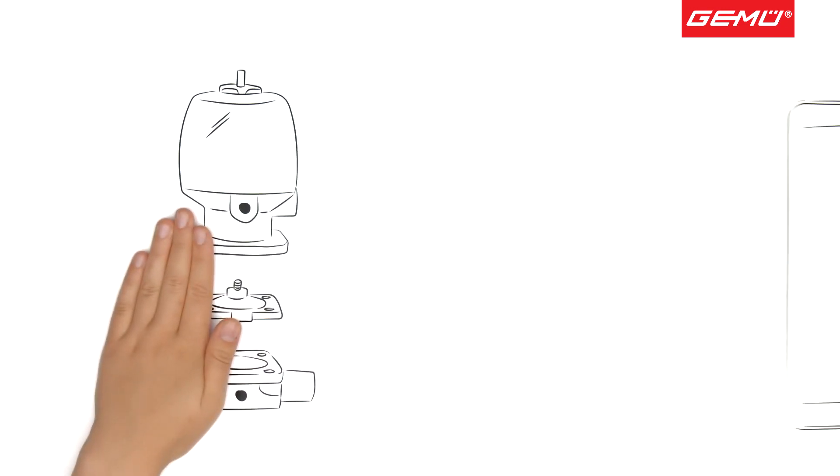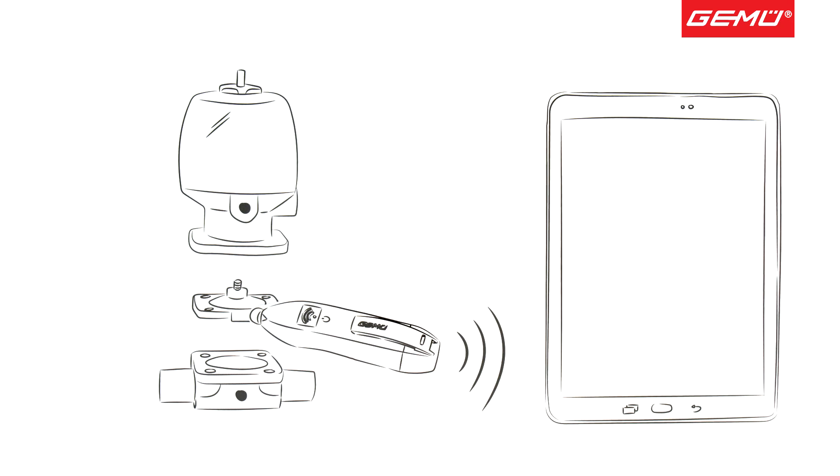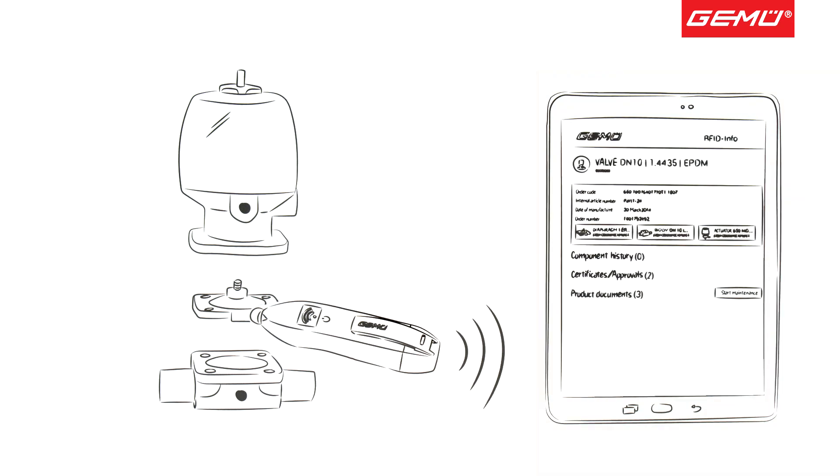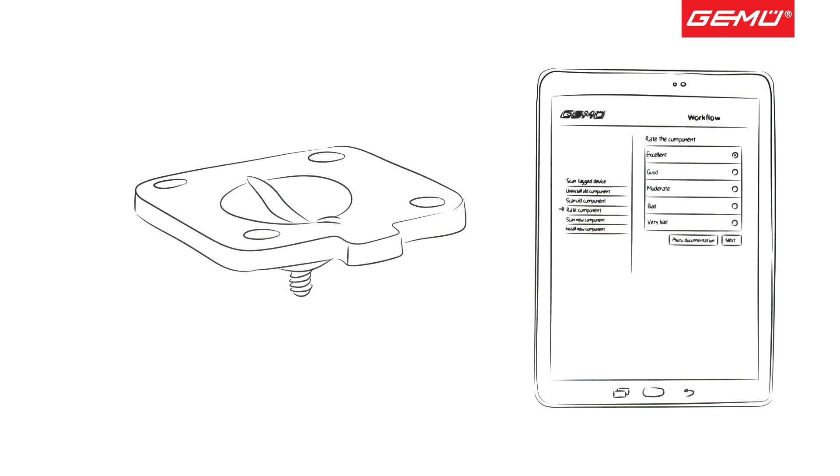When changing diaphragms, he is prompted to scan the old diaphragm. By means of this identification, the change is automatically documented in the maintenance report. Following its removal, Mr. Jones can evaluate the old diaphragm and photograph it.